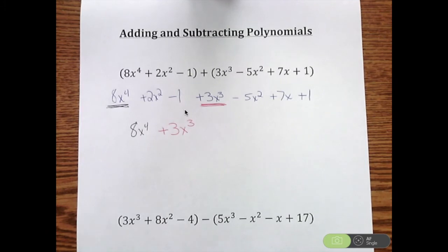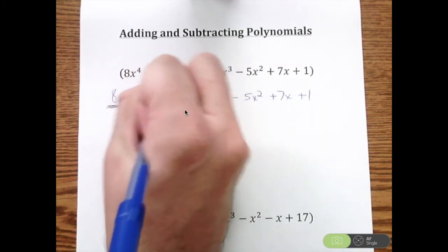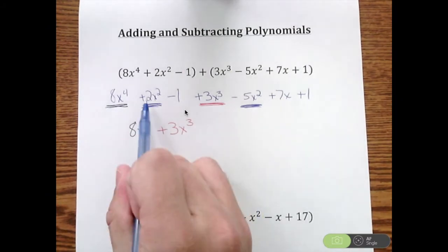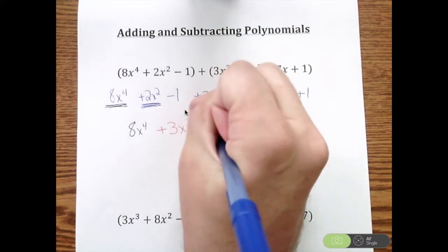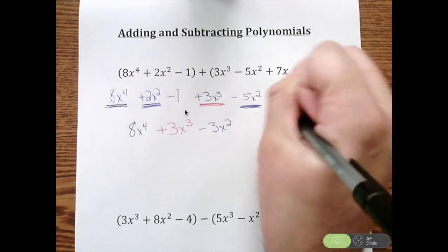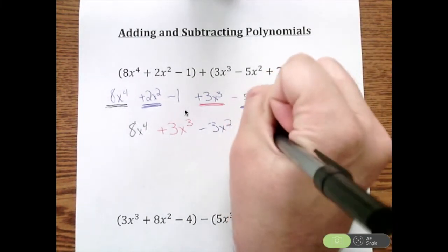Now I'm going to go to my x squared. I have a 2x squared and a minus 5x squared. 2 minus 5, I get negative 3x squared. After x squared, I go to just plain old x's. I got this 7x here, so I'm going to add 7x.